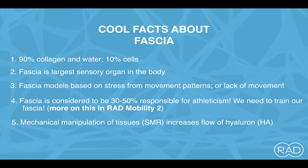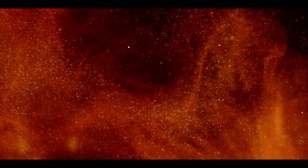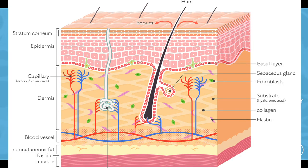Fact five: mechanical manipulation of tissues, whether massage or self-myofascial release, increases the flow of hyaluronic acid, or HA. The body produces this naturally — it's like oil to the engine, meaning it helps our tissues slide and glide to produce more effortless movement. When you're doing SMR, imagine that hyaluronic acid heating up, liquefying, and dispersing throughout the area, helping skin, fat, fascia, and muscle slide and glide more easily.